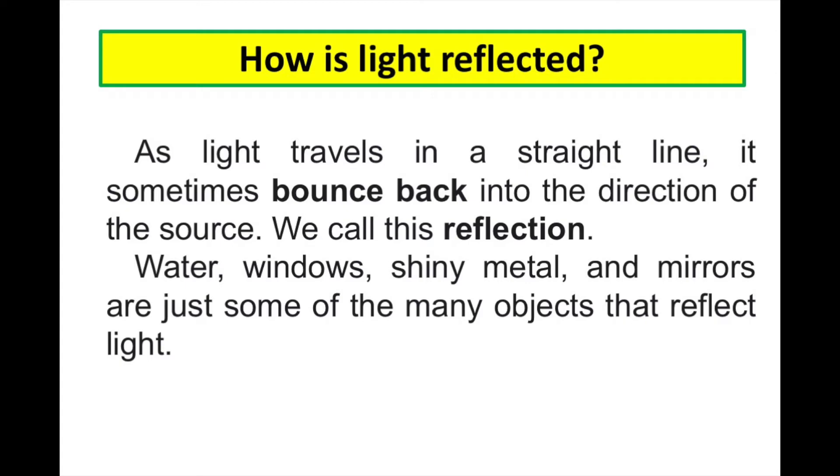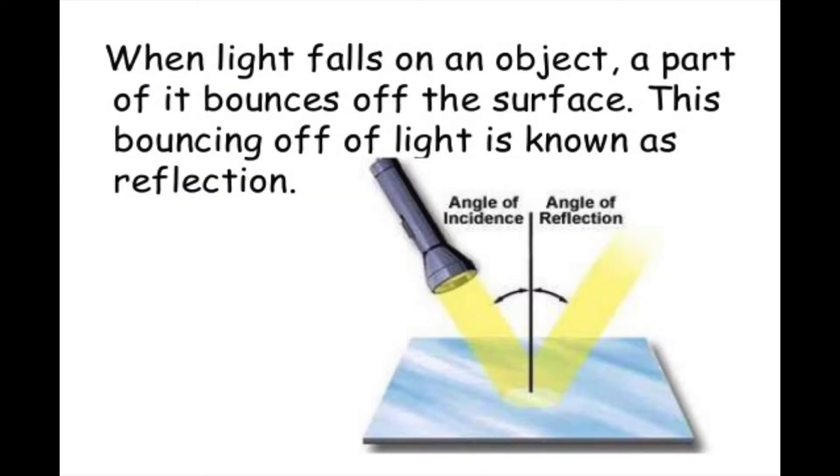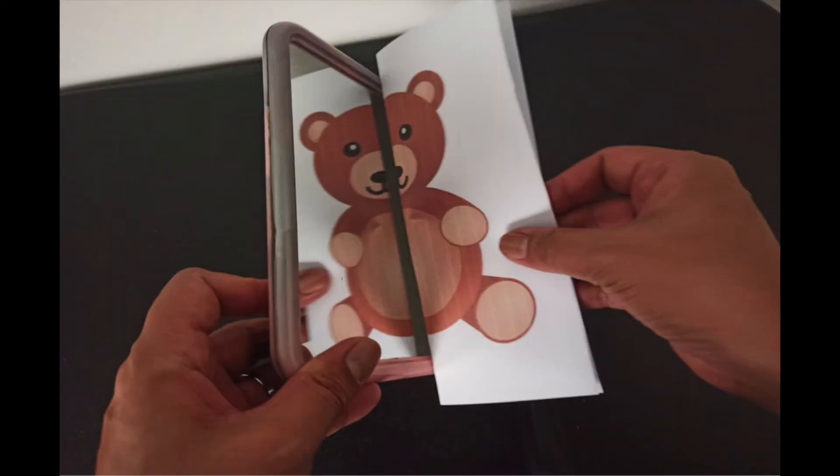Reflection can happen if you have a smooth, highly polished surface like a mirror and you shine a narrow beam of light at it. You get a narrow beam of light reflected back off it. So when we place the halves of the cutout besides the mirror, the picture seems complete or whole.